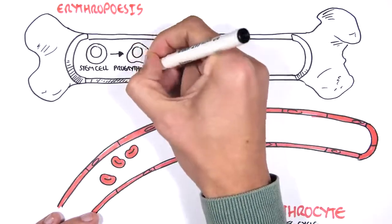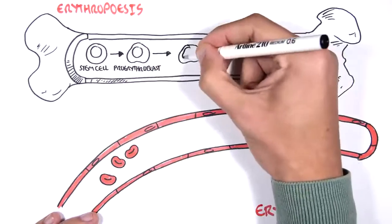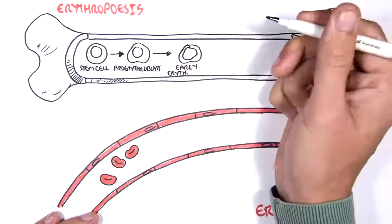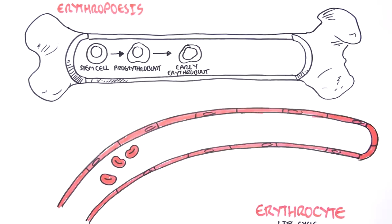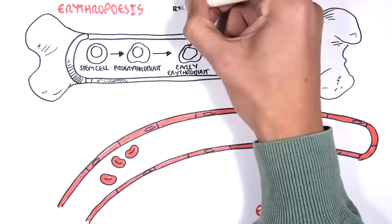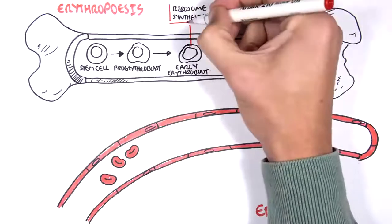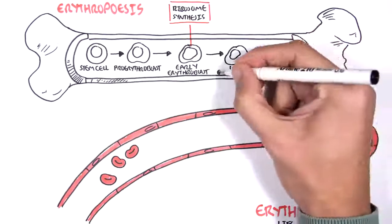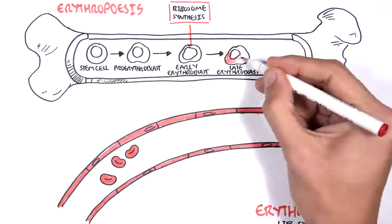Hemopoietic stem cells can differentiate into pro-erythroblast and then early erythroblast. In the early erythroblast stage, we see ribosome synthesis. And this is important because once the early erythroblast becomes a late erythroblast,